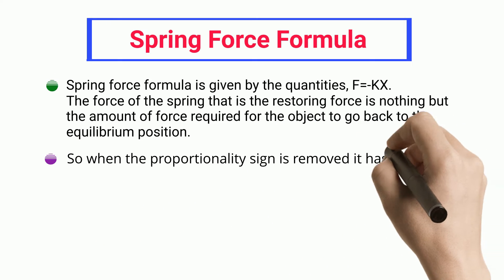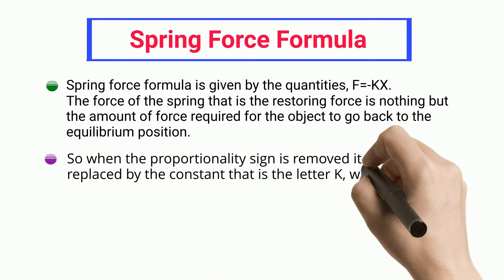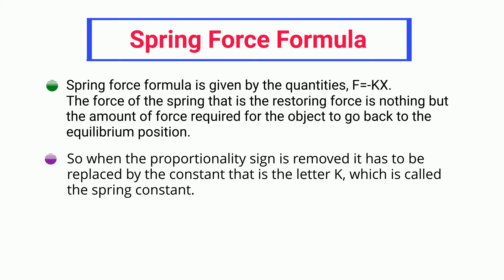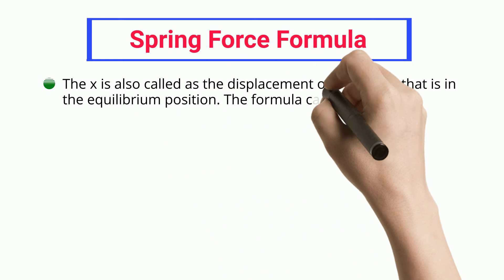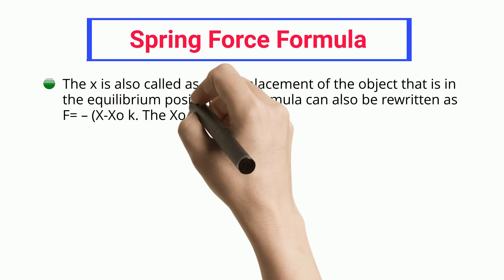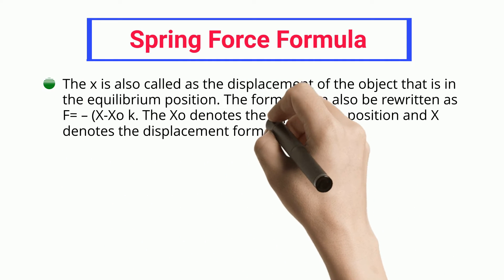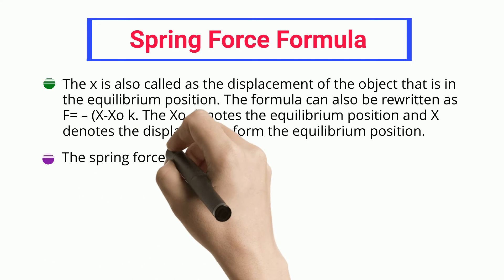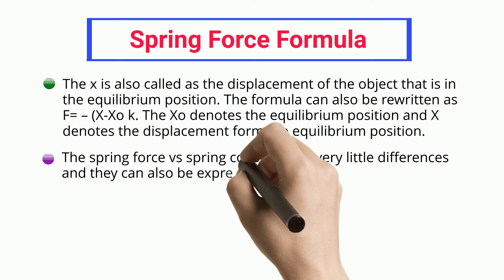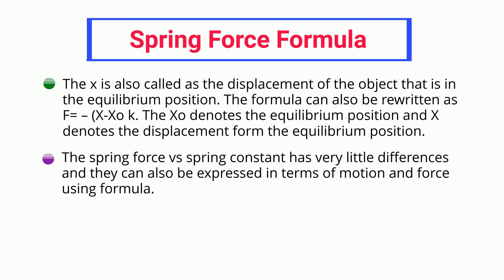When the proportionality sign is removed, it is replaced by the constant k, called the spring constant. The x represents the displacement of the object from the equilibrium position. The formula can also be rewritten as F equals k times (x minus x0), where x0 denotes the equilibrium position and x denotes the displacement from the equilibrium position.